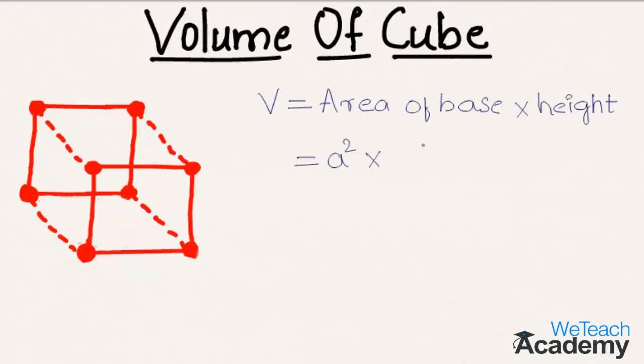In the cube all the sides are equal, and we can also write the side as the height. So by multiplying a square into a, we get a cube cubic units as the volume.